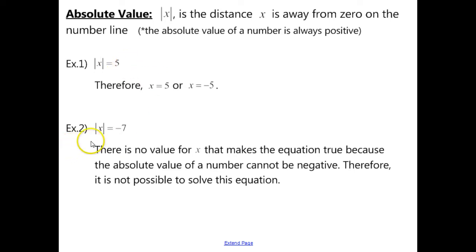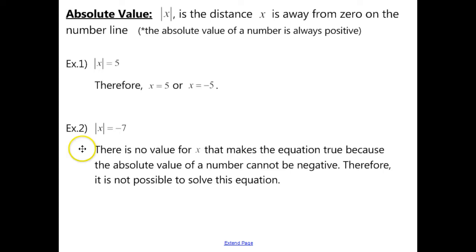Example 2 says that the absolute value of x is equal to negative 7. There's no value for x that makes this equation true, because the absolute value of a number cannot be negative. So if we can't have an absolute value that is negative, this is an impossible equation to solve.